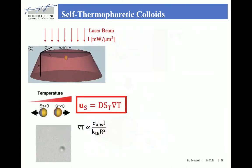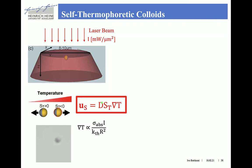A typical example is that of silica particles half-coated with a few nanometers of gold, dispersed in water and illuminated by a laser beam. The gold hemisphere absorbs light, heats up, and establishes a local temperature gradient, which is a function of the absorption cross-section of the cap, the illumination intensity I, the thermal conductivity, and the particle size. As a result, the slip velocity follows thermophoresis and is proportional to the gradient of temperature times the Soret coefficient times the diffusion coefficient of the particle.